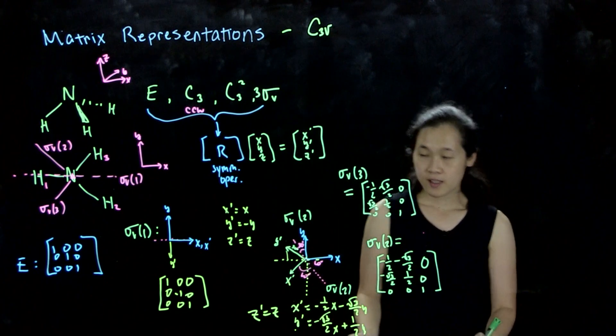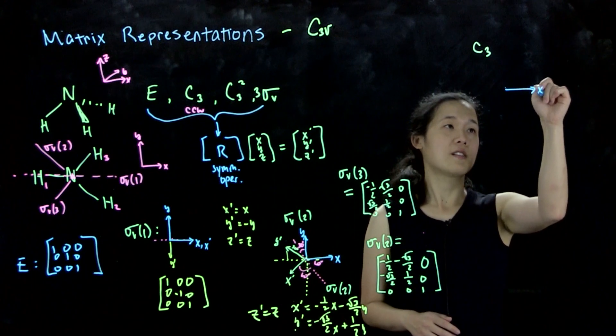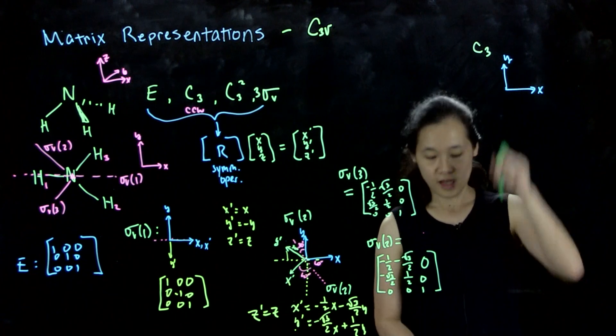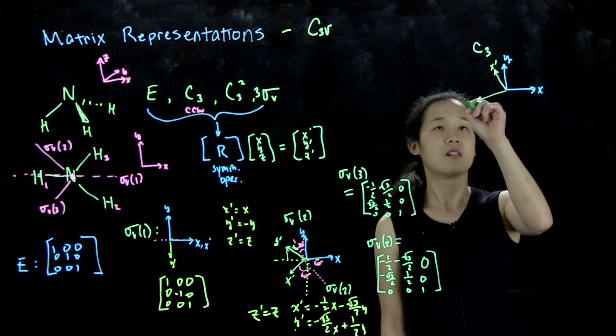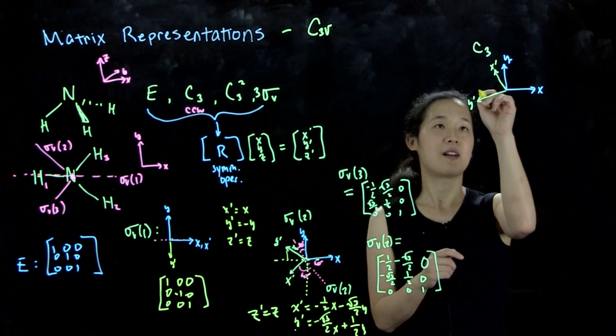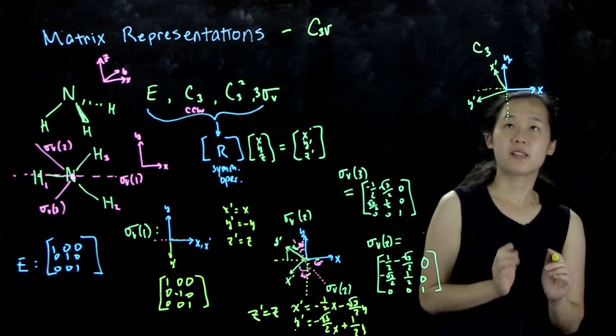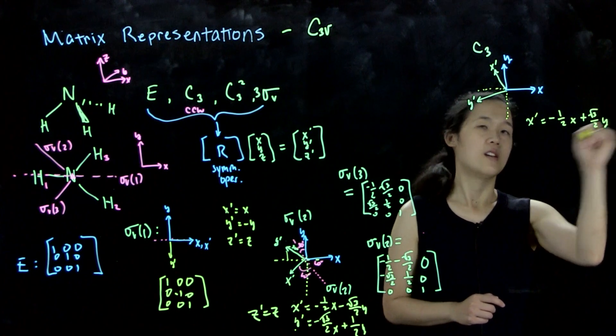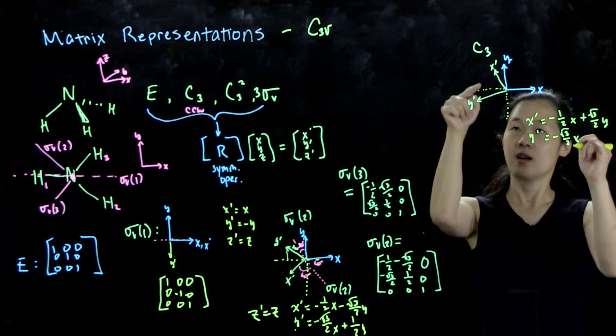And then for the same thing when you want to figure out what C3 looks like, we can do the exact same thing. If we start off with our x and y vectors, C3 again contains the z axis. And then we want to rotate 120 degrees counterclockwise. So then we know that our x prime is going to be here and our y prime will be here. That's our 120 degree rotation going counterclockwise. Because x prime is going upward like that by 120 degrees, we know that x prime must equal negative one-half x plus root 3 over 2 y. And then y prime equals negative root 3 over 2 x minus one-half in the y.